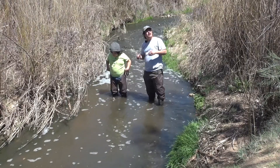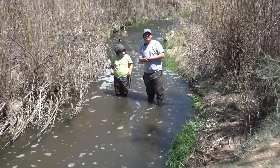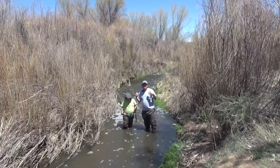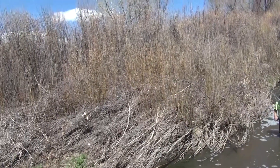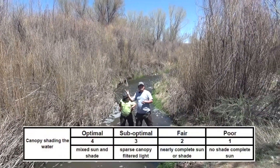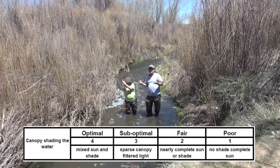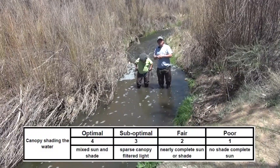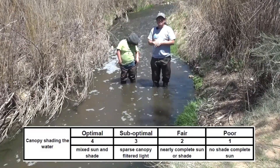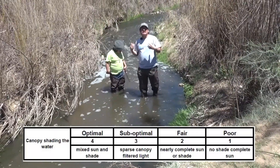We do have trees of various height classes here, but we need to be aware that we are here during the middle of the day, so the sun is hitting the water more than it would during early mornings or the afternoon. These willows could provide a lot of shade during the early mornings and evenings. Looking at the amount of sun interacting with the water right now, we have a measurement of mixed sun and shade, and the vegetation will help protect the water from getting too hot throughout the day.